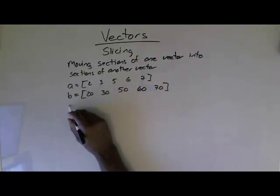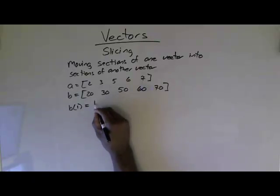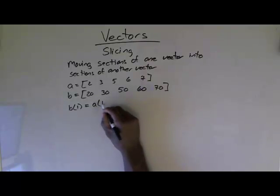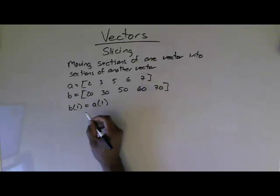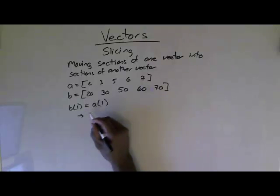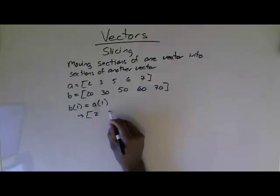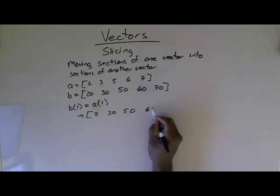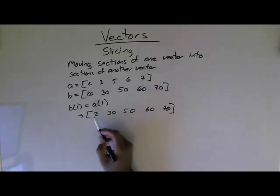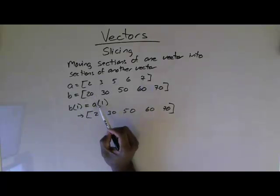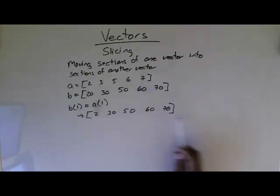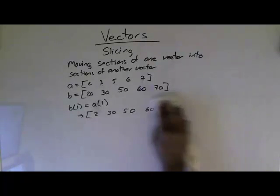I could slice one element and say vector B(1) gets A(1). If I do B(1) gets A(1), now the result is vector B now looks like 2, 30, 50, 60, 70. Because B(1) here, there's 20, got replaced by the value in A(1), which is 2. So now vector B looks like that.